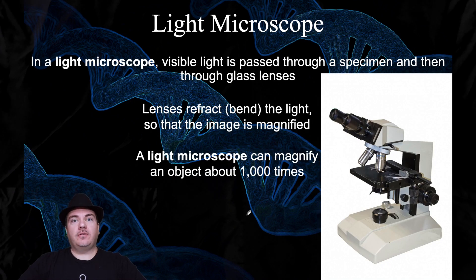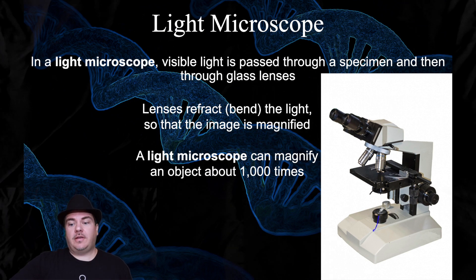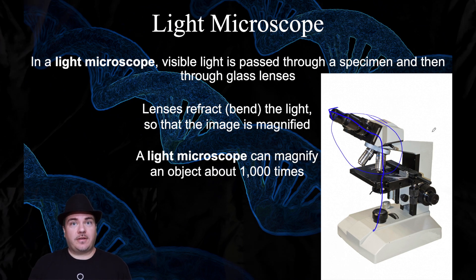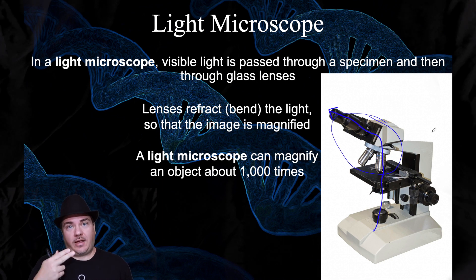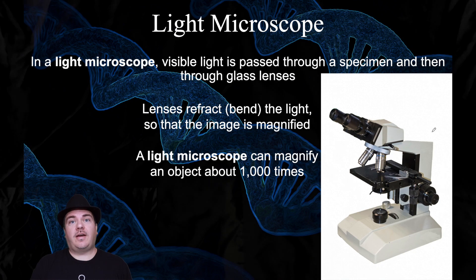To begin discussing microscopes, there are different types you might use. One type is called a light microscope. In a light microscope, light comes up from the bottom, passes through your cells, and then passes through a series of glass lenses on its way to your eyes. That series of glass lenses magnifies the image, making it appear larger than it really is — the glass bends or refracts the light, much like eyeglasses. Light microscopes can magnify things up to a thousand fold, making something look up to a thousand times bigger than it really is, and that's the limit.